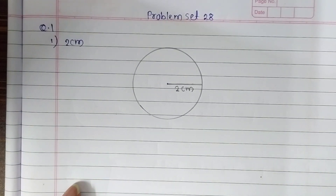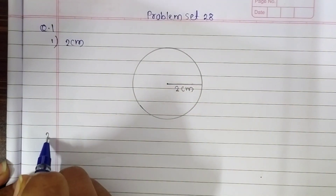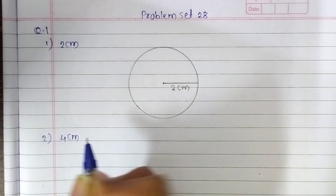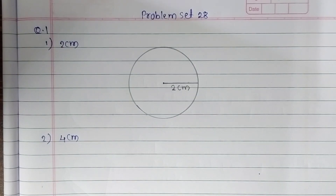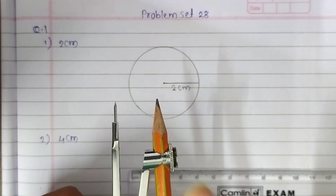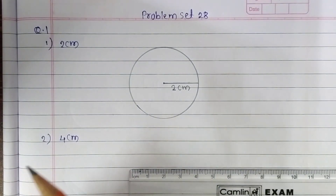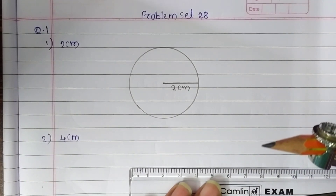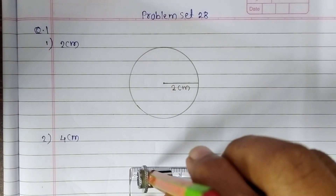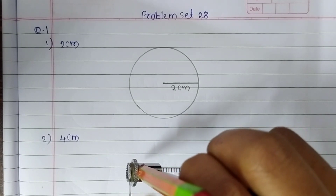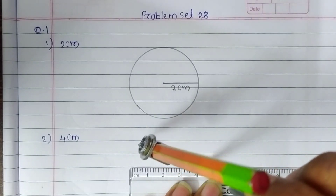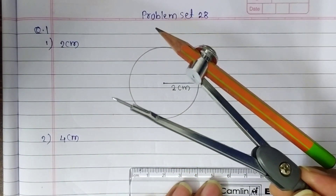Now the second sub-question is 4 centimeters. We have to take a 4 centimeter distance between the metal point and the pencil point of the compass. Adjust the distance. Start from the first line. Here is the 4 centimeter distance.